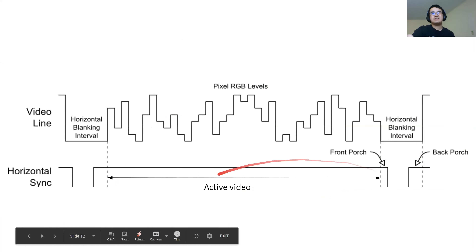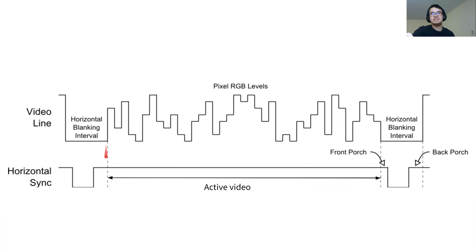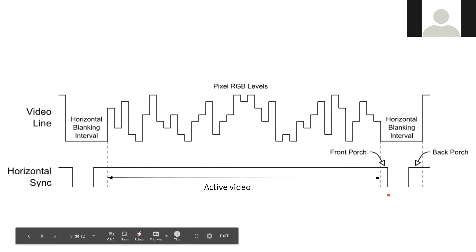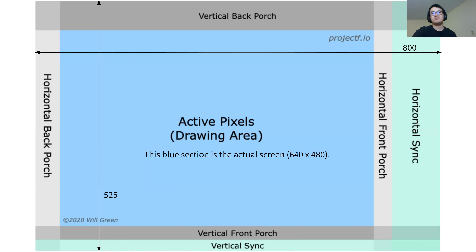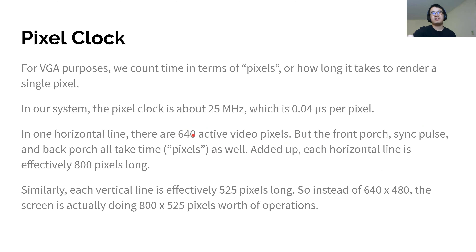Going back to the question about the front porch and back porch: thinking about the horizontal sync alone — in the section where we're sending values for each pixel, that's when we send actual pixel data. Then the front porch, back porch, and horizontal sync are all in the blanking interval. The front porch sends zero values to start resetting the reference voltage for the gun. Then you actually horizontal sync. Then you have your back porch, which is also mainly for voltage reference. After all this time, you go back to sending values. This blanking interval duration is a hard number for your screen resolution — so for 640 pixels on a horizontal line, you actually do 800 pixels total to account for the blanking interval.